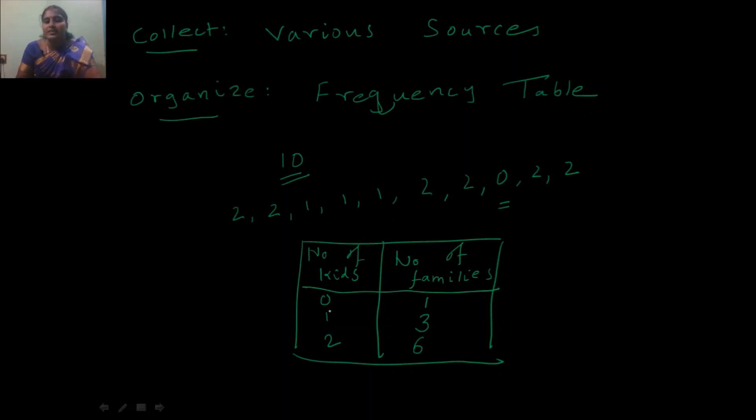That means there are no kids at only one family, and there is only one kid in 3 families, and there are 2 kids in 6 families. And the total of all these values is nothing but 10. That means I have used all the collected data into a frequency table.